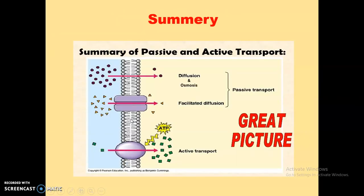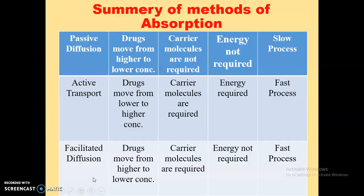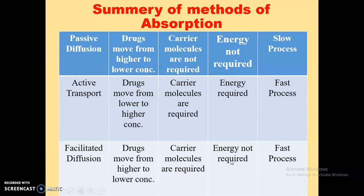Here is a summary of passive diffusion, active transport, and facilitated diffusion. In passive diffusion, drugs move from higher to lower concentration; in facilitated diffusion, drugs also move from higher to lower concentration; whereas in active transport, drugs move from lower to higher concentration. In passive diffusion, no carrier molecule is required, while in active transport and facilitated diffusion, a carrier molecule is required. Energy is not required in passive diffusion or facilitated diffusion, but energy is required in active transport. Passive diffusion is a slow process; active transport is the fastest among all three; and facilitated diffusion is faster than passive diffusion.